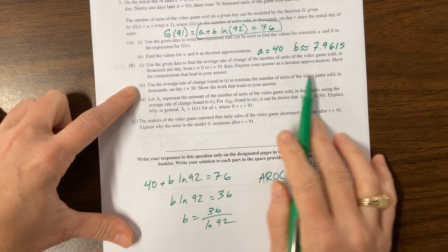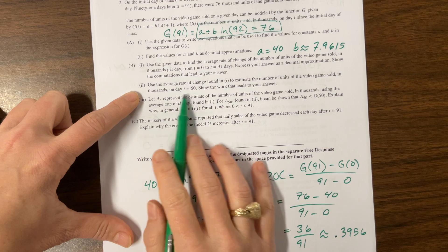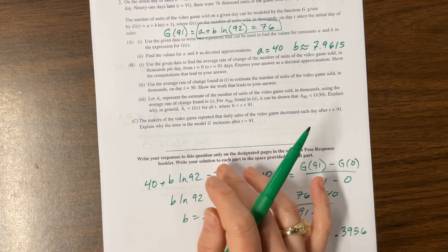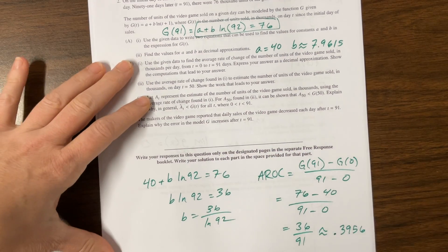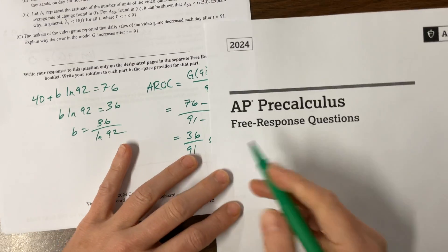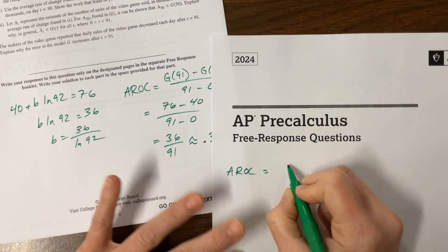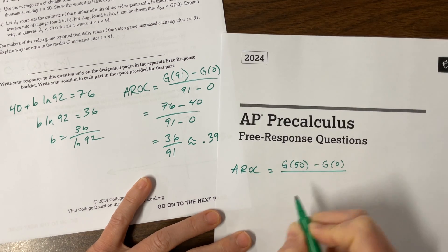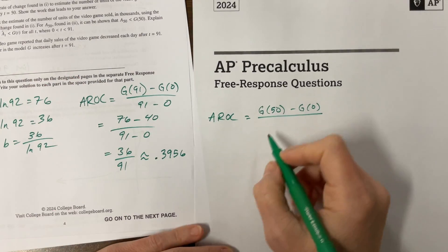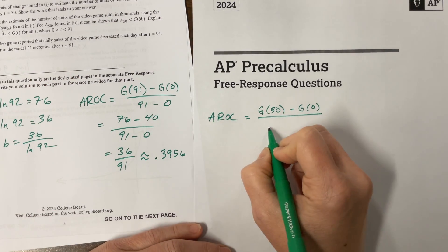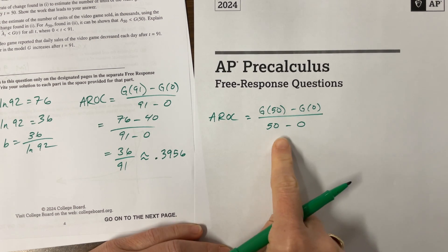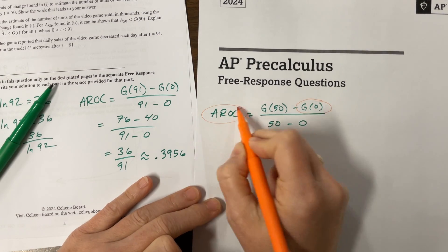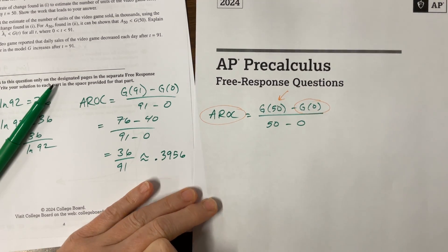Use the average rate of change to estimate the number of units of video games sold in thousands on day 50. The way I've been solving these: the average rate of change equals g of 50 minus g of 0 over 50 minus 0. I plug in what I know — I know the AROC value, I know g of 0, and I'm solving for g of 50.